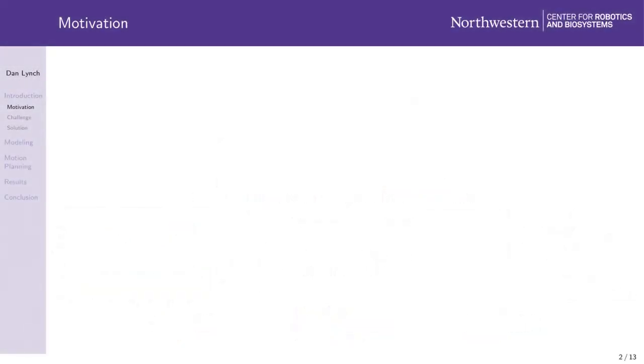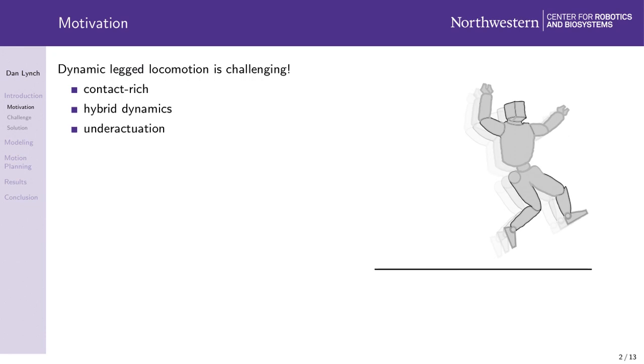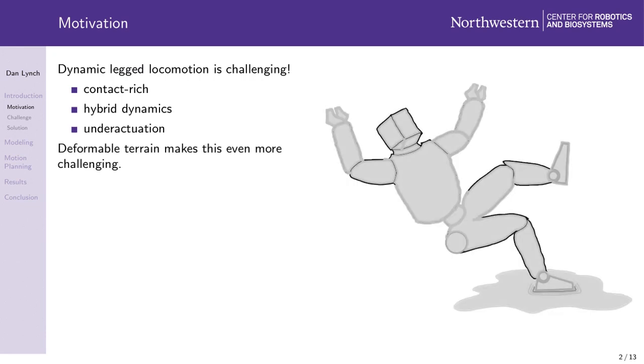I'd like to motivate this talk by acknowledging a reality of dynamic legged locomotion. It's really hard. It's contact rich, it has hybrid dynamics, and it often involves underactuation. When the terrain underfoot can yield, as is the case with soil, sand, or snow, achieving dynamic legged locomotion becomes even harder.